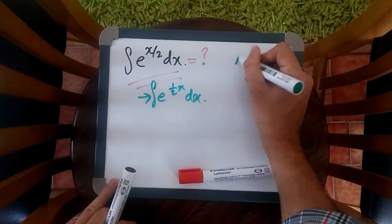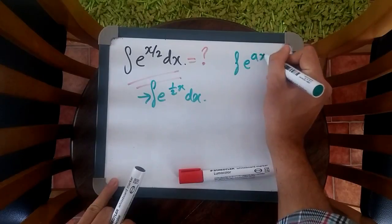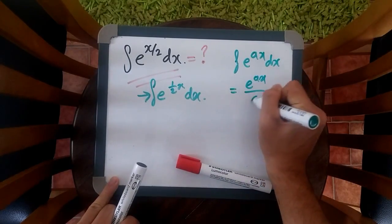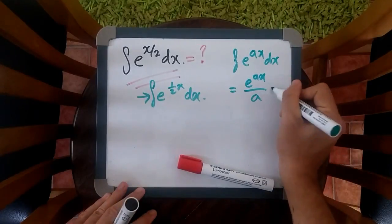So you can imagine that if the question was to integrate e to the power of ax, where a is a constant, you just throw it underneath, literally as that, and write plus c.